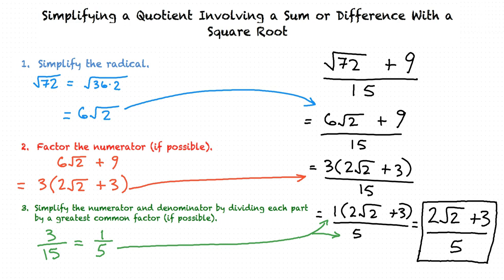Just to summarize: when you have a problem like this, you first simplify the radical, then see if you can factor the numerator, and if so, divide the pulled-out factor and the denominator by their greatest common factor. After doing this, the fraction should be fully simplified. Good job — you have learned this topic well!